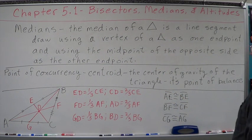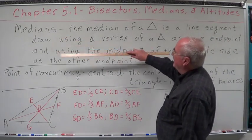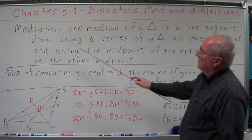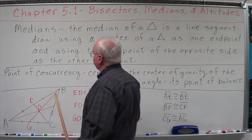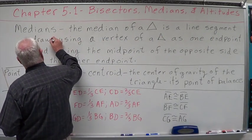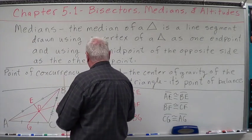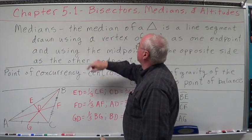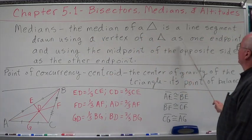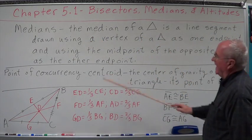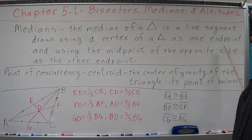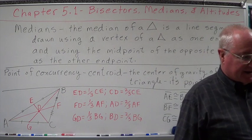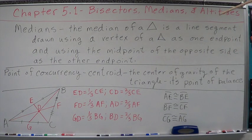Median. The median of a triangle is a line segment drawn using a vertex of a triangle as one endpoint and using the midpoint of the opposite side as the other endpoint. So it's going to connect the midpoint of one side to the opposite vertex.